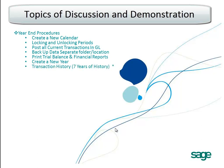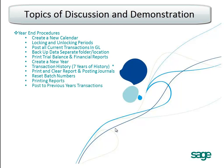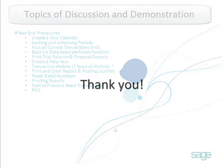Additional topics include: Create a New Year, Transaction History, Printing and Clearing Posting Journals and Batch Status Reports, Reset Batch Numbers, Printing Reports, and Posting to Previous Year.